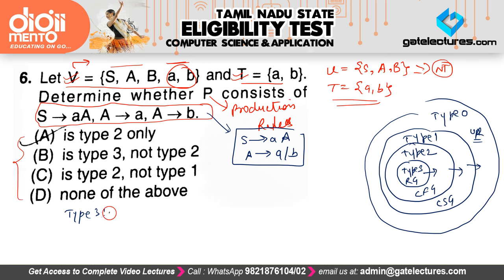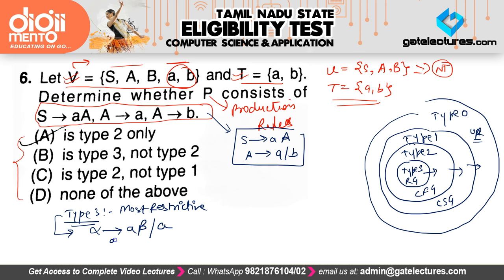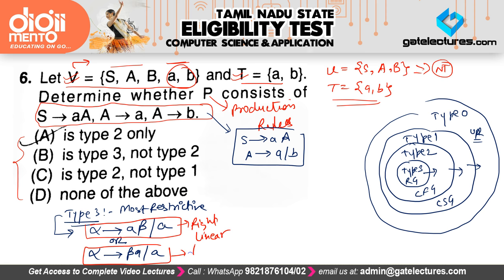Type 3 grammar is the most restrictive one. Productions can be of the form alpha derives a·beta (right linear) or alpha derives beta·a (left linear). Either productions can be left linear or right linear, but not both. The productions given here are right linear, so this grammar satisfies the conditions of Type 3.